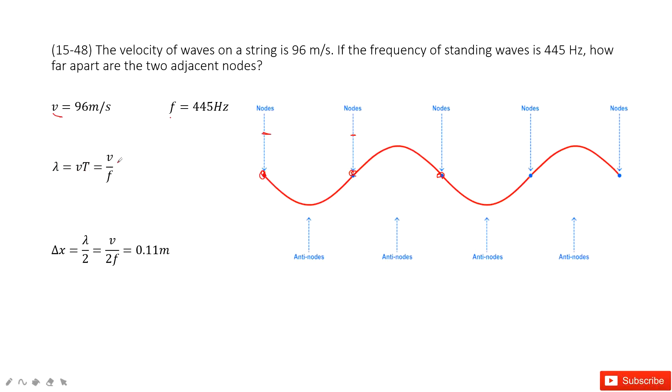And the period can be written as 1 over frequency. Now the distance is lambda over 2. So we get a function for delta x. Input all the known quantities to get the answer there. Thank you.